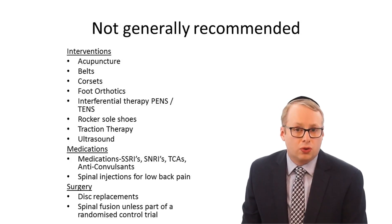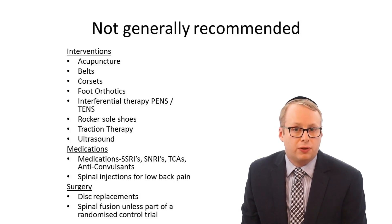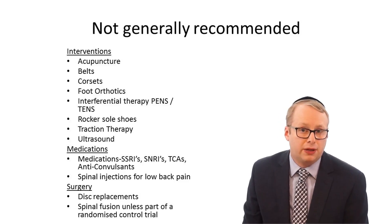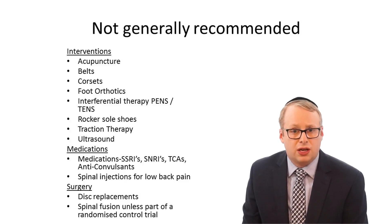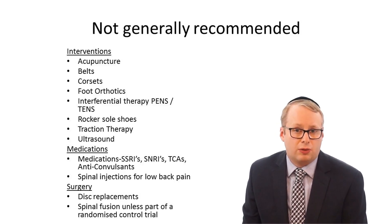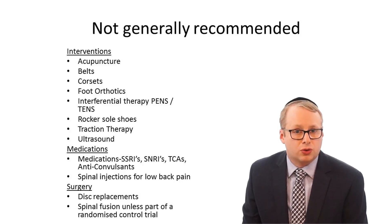Let's start with what's not currently recommended. This can be due to a variety of reasons including lack of efficacy, high side effect profile, poorly constructed clinical trials and adverse cost-to-benefit profiles. Not recommended are: acupuncture, belts, corsets, foot orthotics, interferential therapy with percutaneous or transcutaneous electrical nerve stimulation (PENS or TENS), rocker sole shoes, traction therapy, or ultrasound. Medications such as SSRIs, SNRIs and tricyclic antidepressants such as amitriptyline are not recommended, nor are anticonvulsants such as the gabapentinoids. For low back pain alone without sciatica, spinal injection is not recommended. Disc replacements are not recommended, and nor is spinal fusion unless part of a randomised controlled trial.